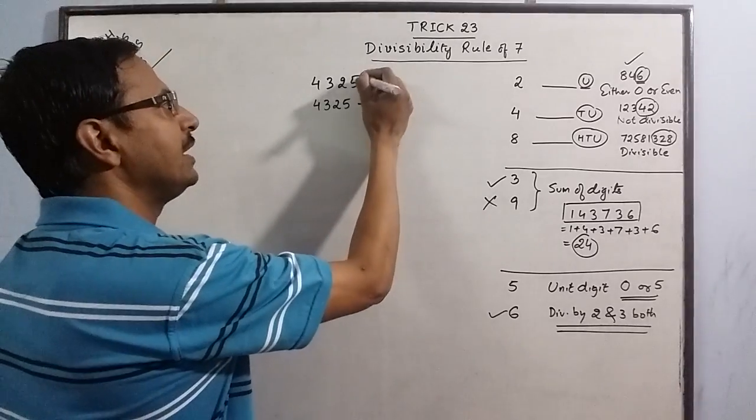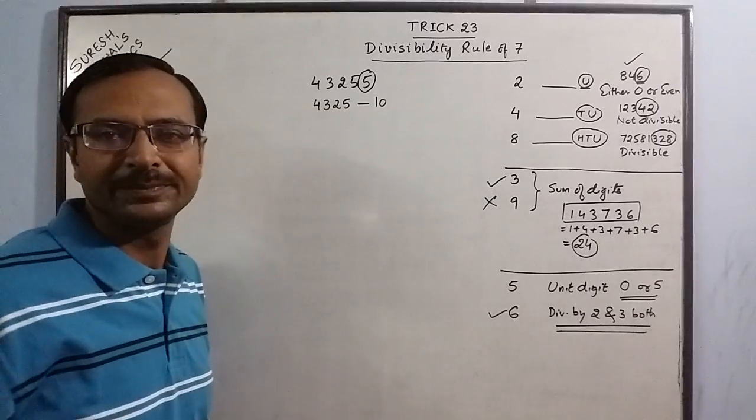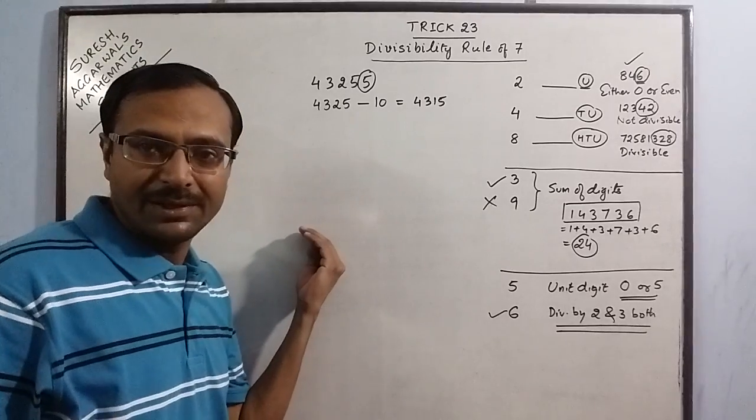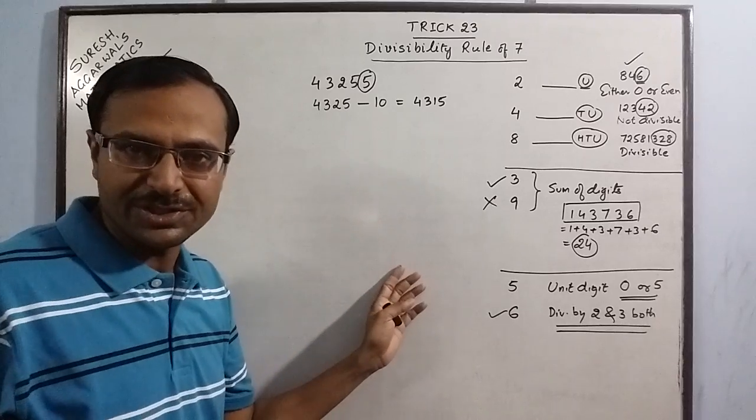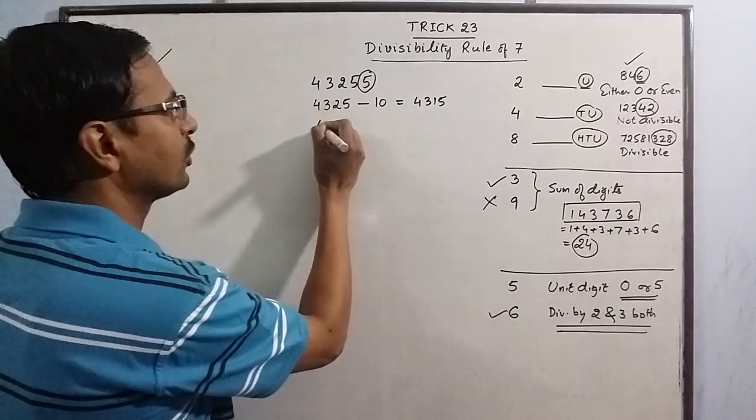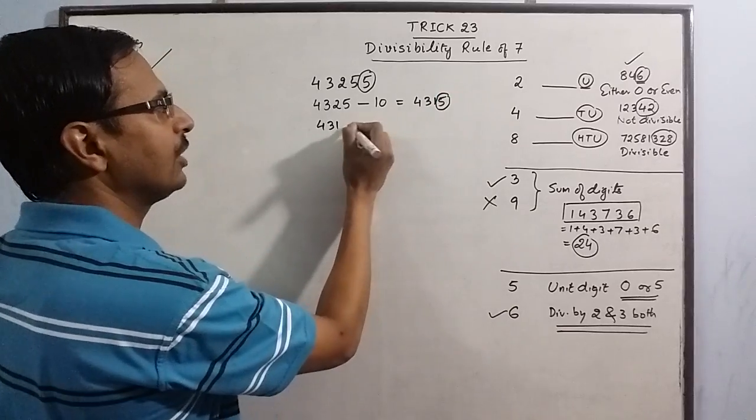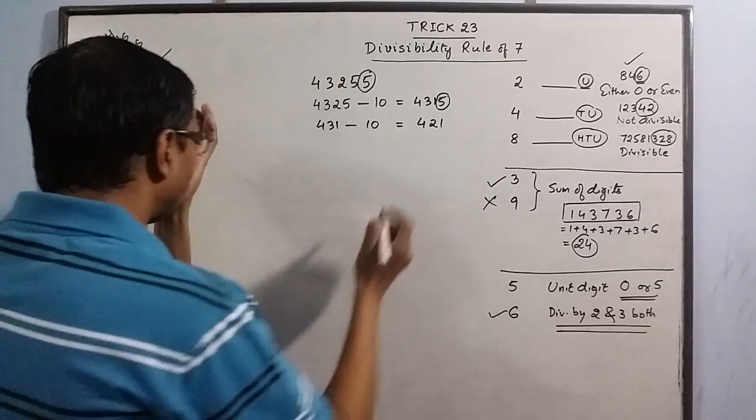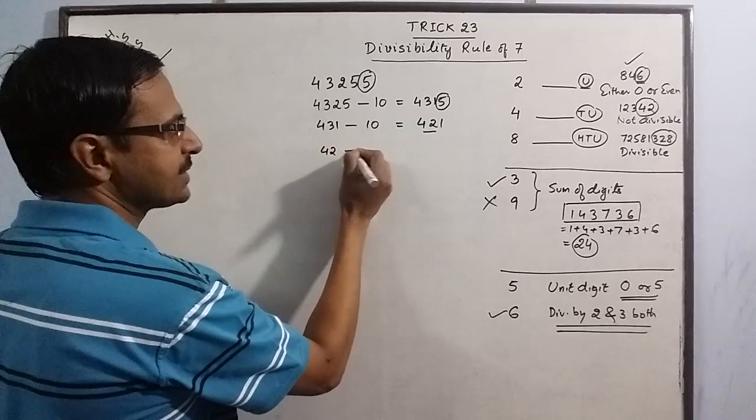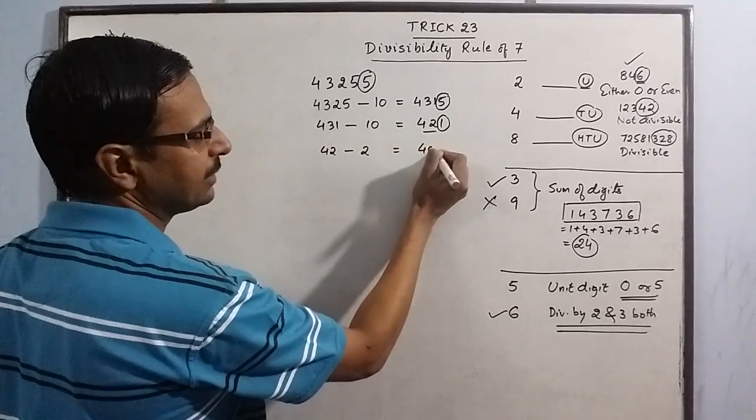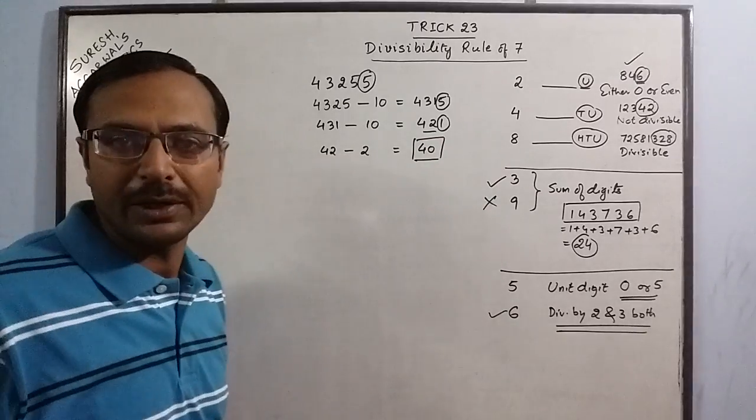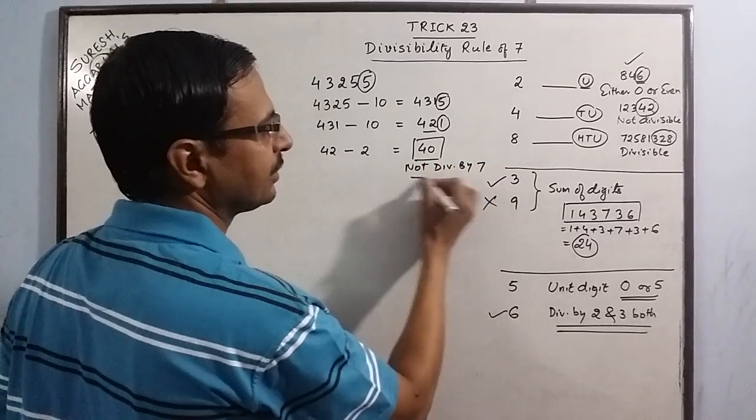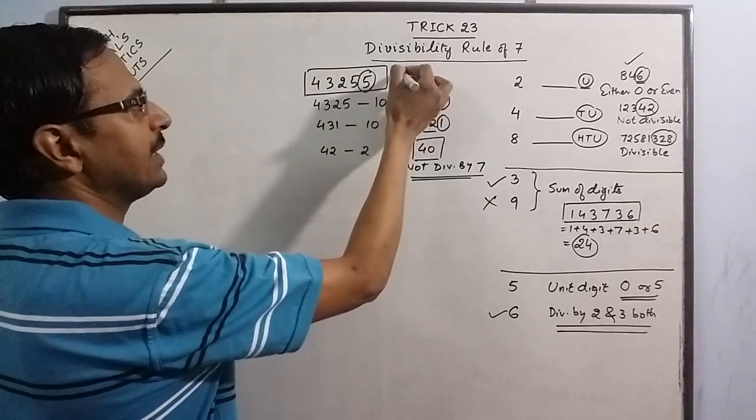And we subtract double of this from the number. So we get 4315, and we continue this process until we reach at a single digit or a double digit. Say here we have 431, now I have left behind 5 and double of 5 is 10, so subtract 10, we get 421. Similarly, 42 minus double of 1, 2, is 40. Now this number 40 is not divisible by 7, not divisible by 7, so the entire number is not divisible by 7.